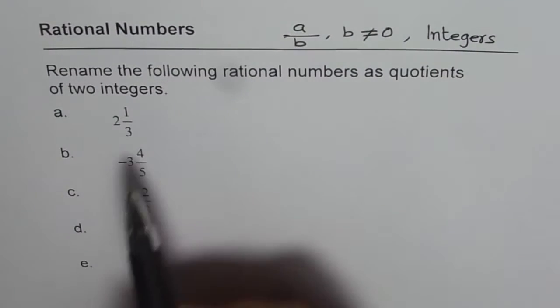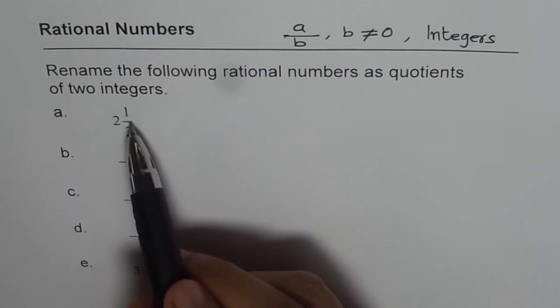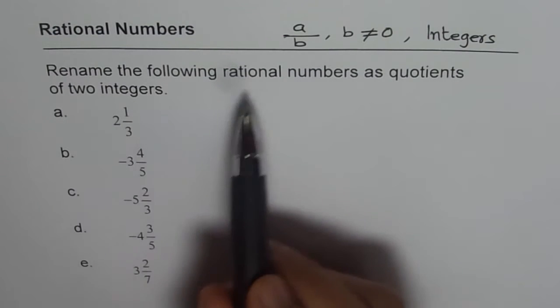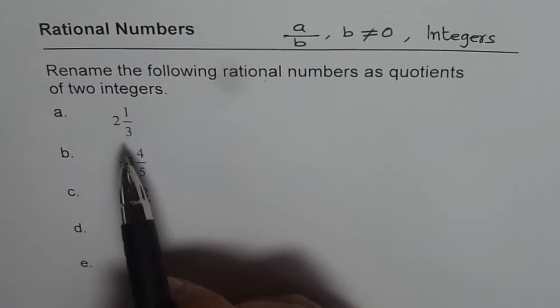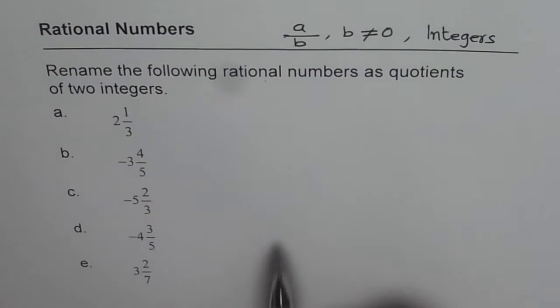Now you could also write them as mixed numbers, as 2 1/3. These are rational numbers. Now let's see how to write them as quotients.